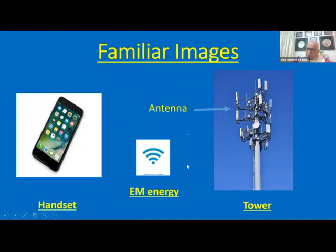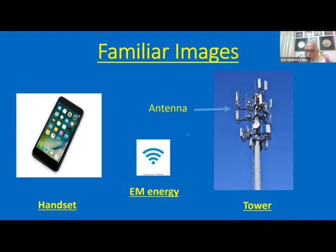Before I start the topic, I want you to see this photograph. One is your mobile phone, which I'll be referring to as handset. And there is a sign there which you're all familiar with — you would have seen it so many times in many places — which represents EM energy, which is nothing but electromagnetic energy. And then you have a photograph of a tower which may be located very close to your house. On the tower, you see a lot of structures called antennae, through which you are able to communicate, transmit, and receive. But remember, it is in EM energy that all this transmission and reception takes place.